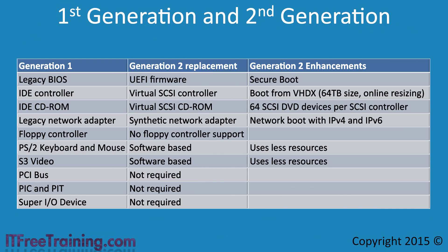Since the hardware used in first and second generation has changed, it is a good idea to look at how it has changed. The first change is the legacy BIOS has been replaced by UEFI firmware. This is one of the major reasons second generation requires a 64-bit CPU. Although it is possible to use UEFI on 32-bit systems, in most cases UEFI is used with a 64-bit system. If you need 32-bit support, use first generation, which is well supported with the legacy BIOS option.